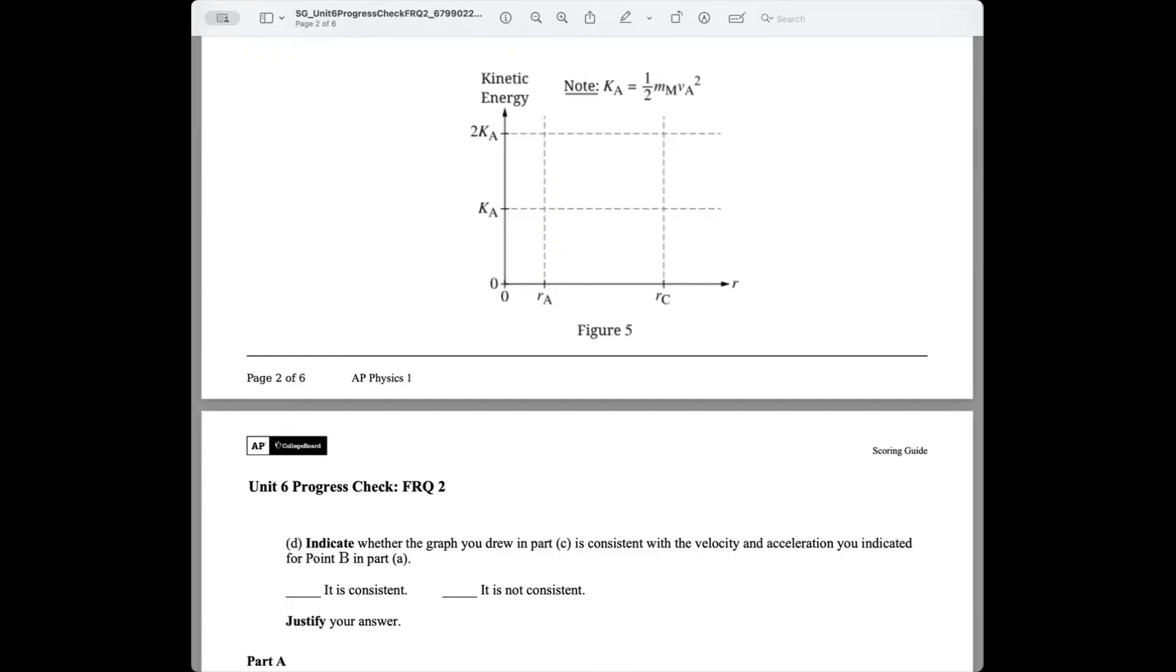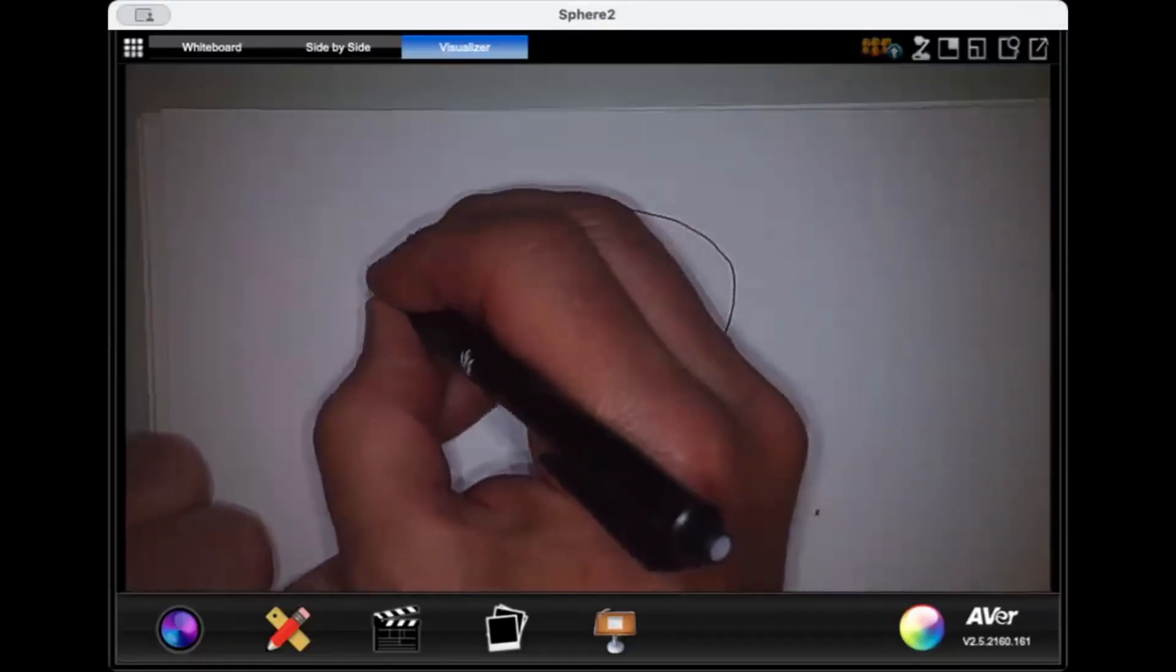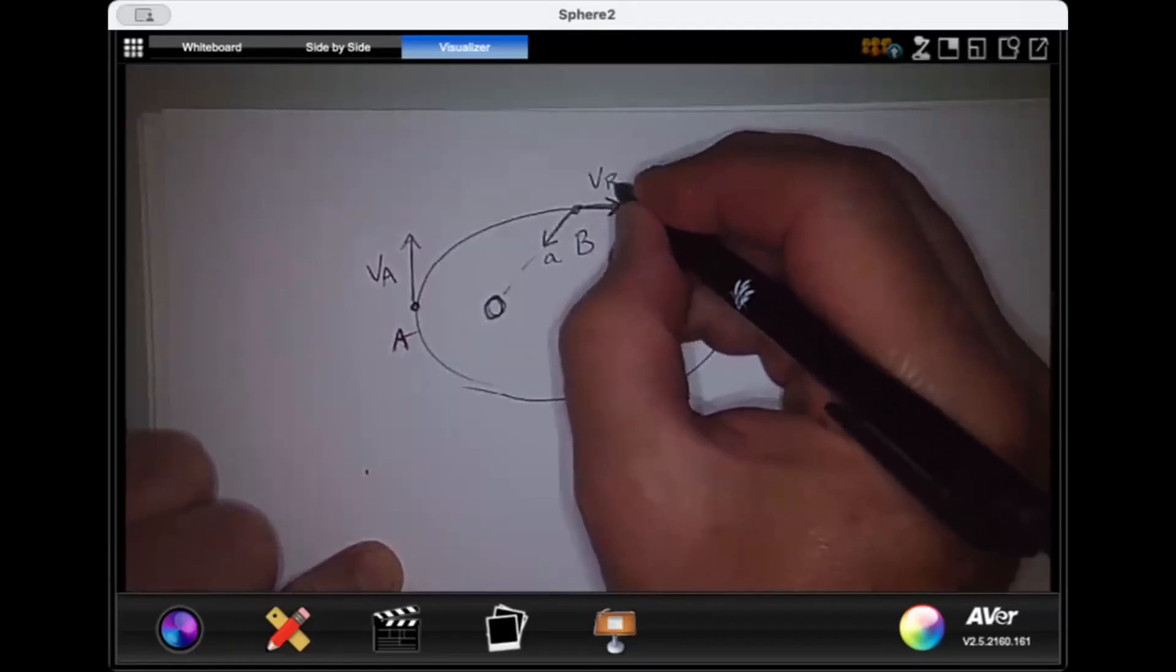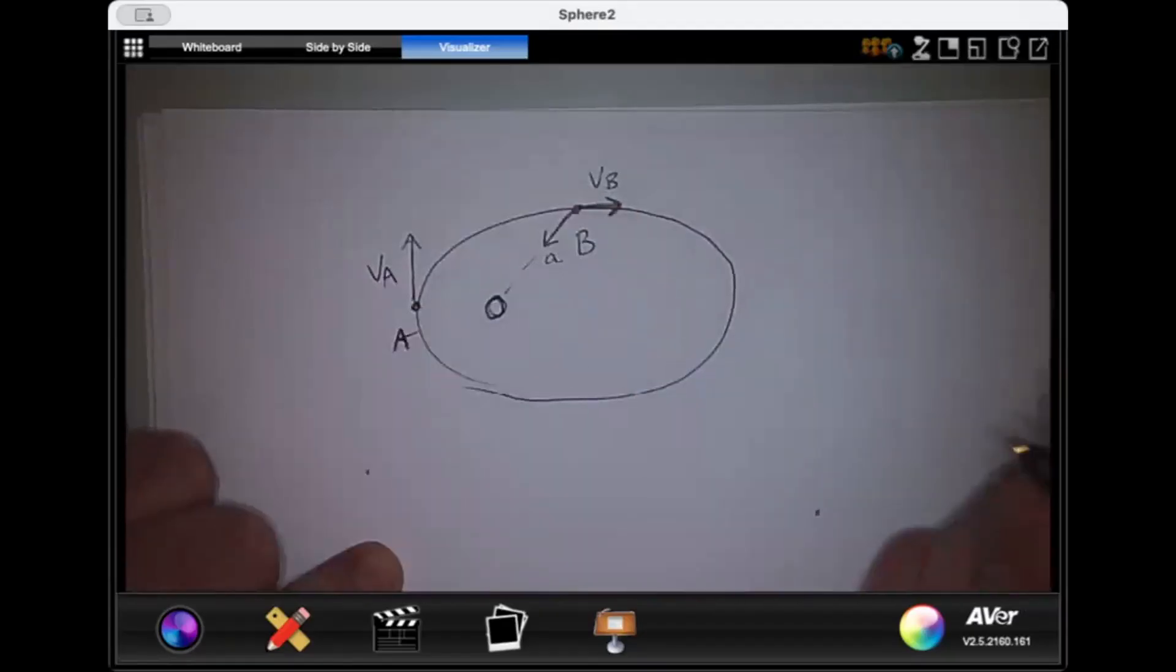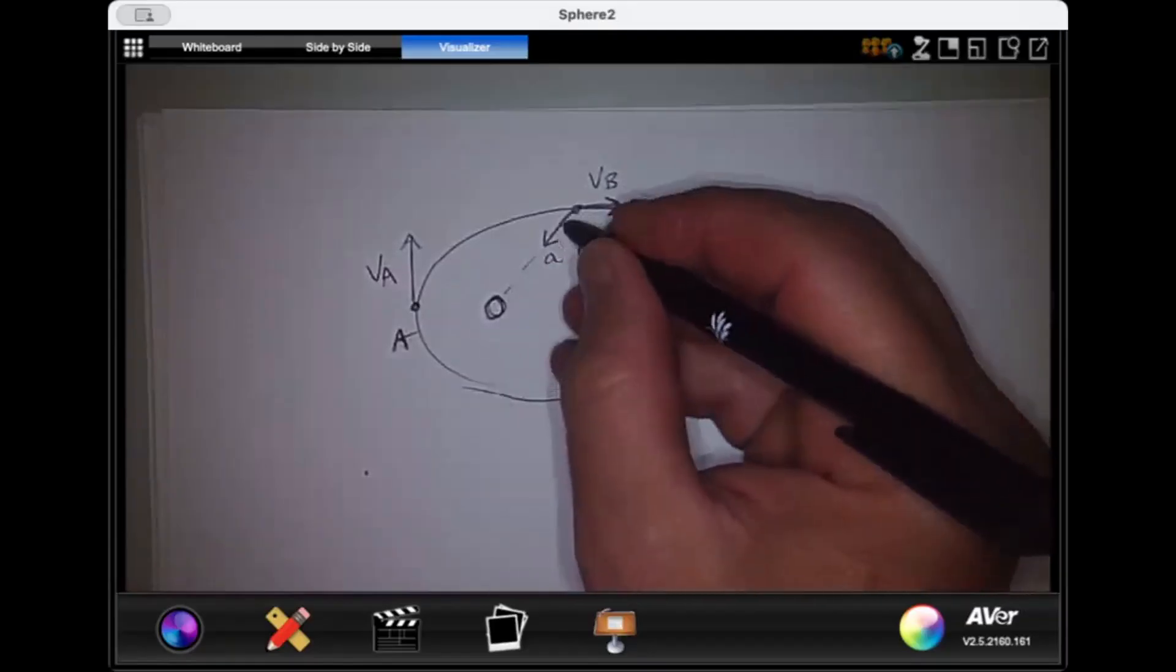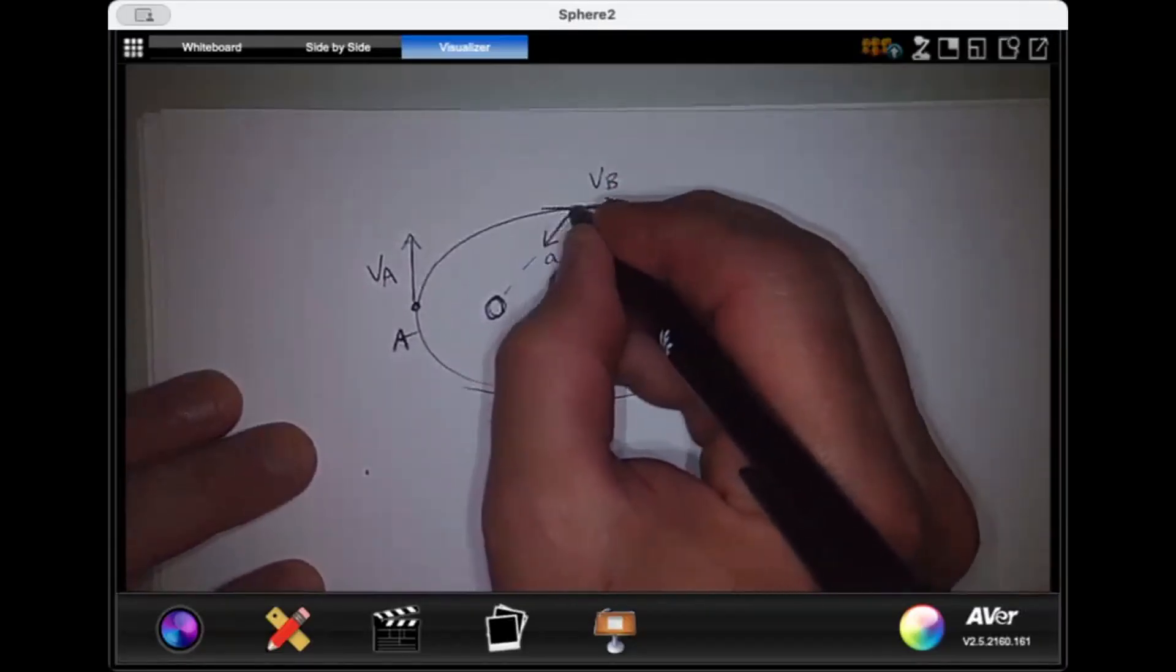All right, part D. Indicate whether the graph you drew in part C is consistent with the velocity and acceleration you indicated for point B in part A. It is consistent. Check that box, and let's talk about why. Okay, before we justify, I want to remind you of some important things. This is V sub A. This is V sub B, which is half of that velocity right there. And this is our acceleration that's pointing towards the planet, which makes sense. There's an unbalanced force producing this centripetal acceleration. But this acceleration actually has two components. It has a component AX and a component AY.